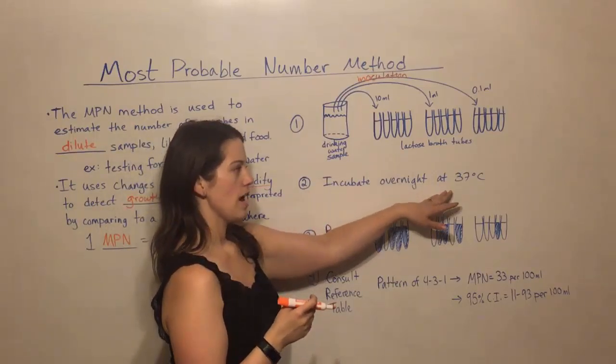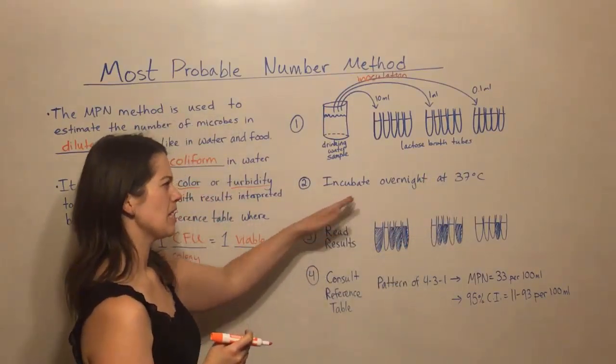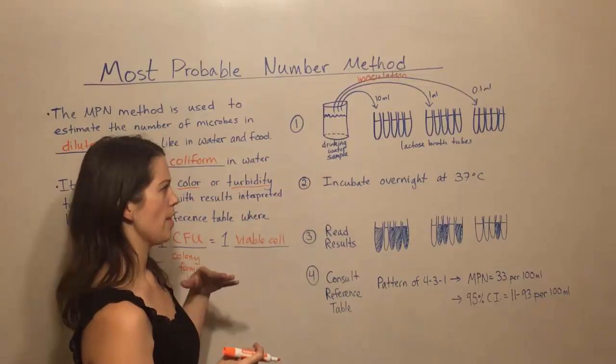Then we incubate overnight at 37 degrees. Typically you want to incubate for like 24 hours for this particular method.